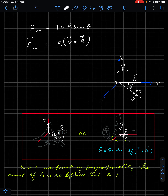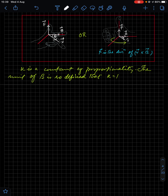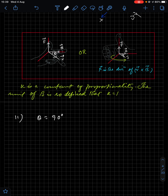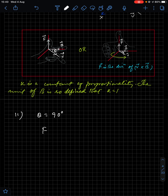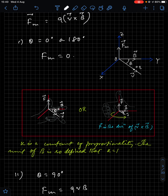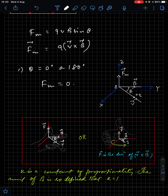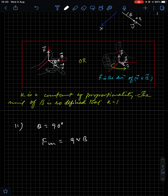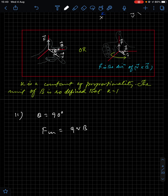Applying conditions to the scalar relation F_m = qvB sinθ: if θ = 0° or 180°, meaning the charge particle is going parallel or anti-parallel to the field, then sin0 or sin180 equals zero, so magnetic force is zero. No force acts on a charge moving parallel or anti-parallel to the magnetic field. When θ = 90°, the magnetic force is maximum: F_m = qvB.